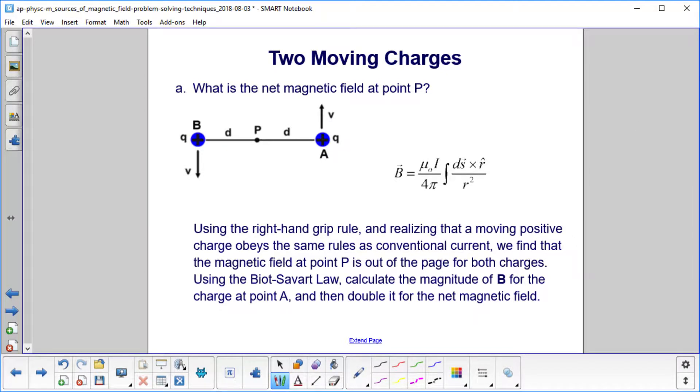What is the net magnetic field at point P? First, we'll find the direction of the magnetic field. We will use the right-hand grip rule and realize that a positive charge moving like this has the same impact on creating a magnetic field as a current in that direction, because a current is just a bunch of charges.